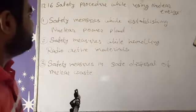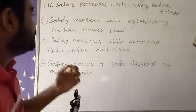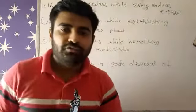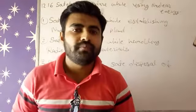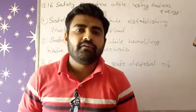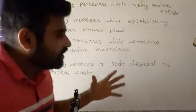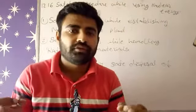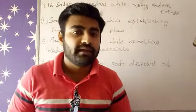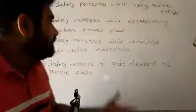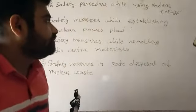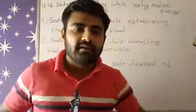The topic is safety procedures while using nuclear energy. The first safety measure is while establishing a nuclear power plant — it should be very far away from the residential area. This power plant should be evacuated by a very thick wall of lead, because lead can resist the radiations of radioactive elements.